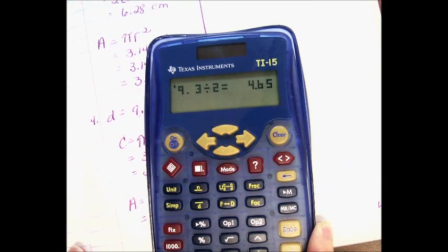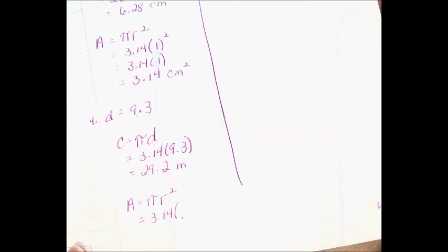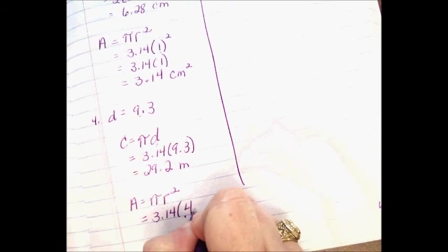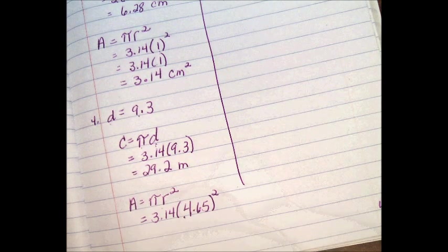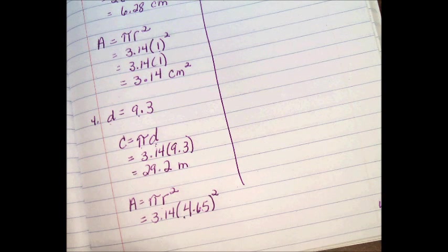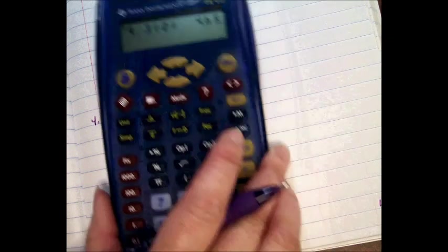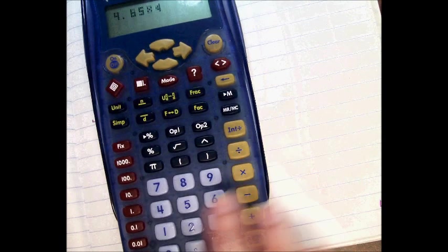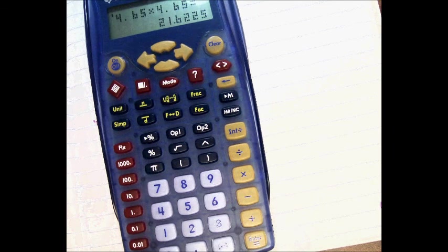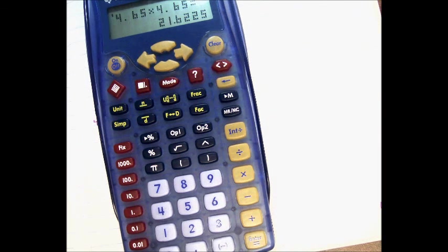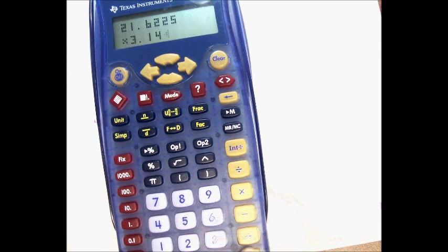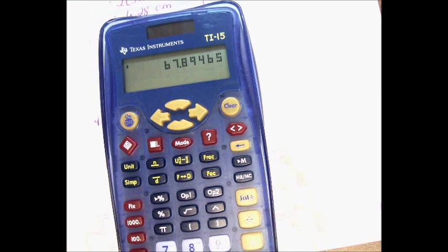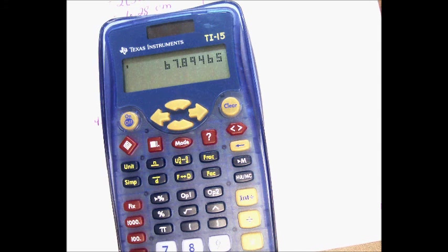So now I'm going to square 4.65. I'm going to multiply it times itself. Now I'm going to multiply that times pi. There's my answer. 67.89465. The directions say round to the nearest tenth, which is this spot right here. 67.9 meters. And because it's area, my units will be squared.